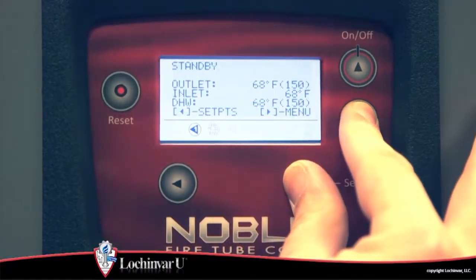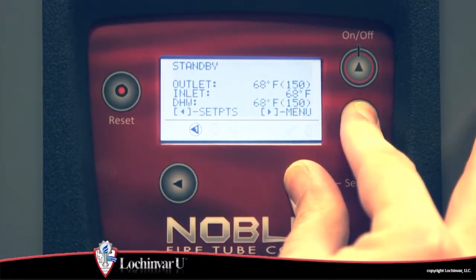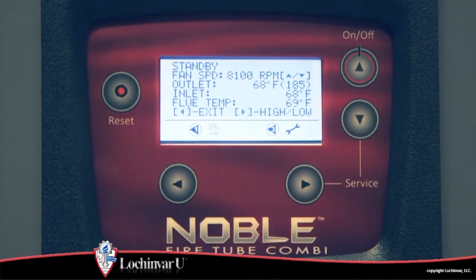Press and hold the right arrow and down arrow button simultaneously for five seconds. A wrench will appear on the status line of the display.